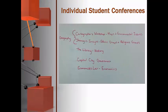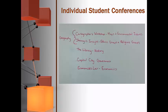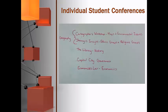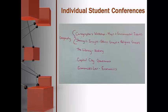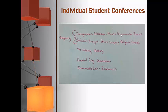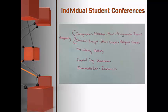I created five different small groups in Edmodo: Cartographer's Workshop for reviewing maps and environmental issues; Shaman's Insight for ethnic groups and religious groups; The Library for history; Capital City for government; and the Economist Layer for economics. Geography is such a large strand that I split it into two separate groups, since some students needed more help with ethnic and religious groups while others needed more help with map skills and environmental issues.